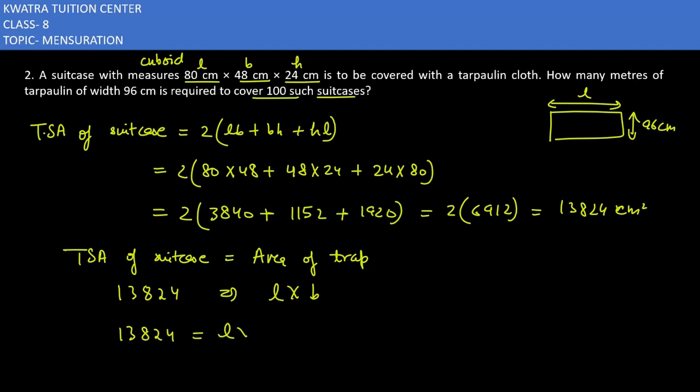So 96 is what will happen? It will be in division. So length find out: 13,824 divided by 96 will give you 144 cm.